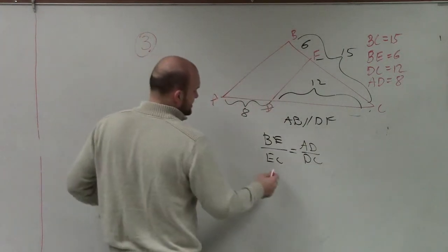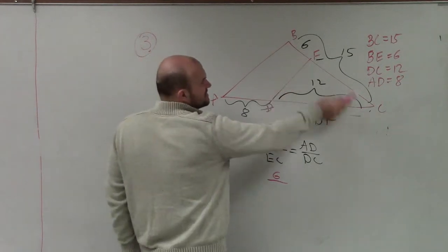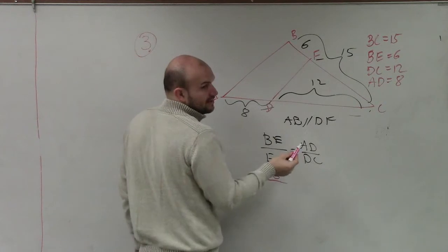So now let's just plug in our lengths. So we know BE, which is 6, is to EC. We have a problem, though. We don't know EC. We only know BC and BE. But Kevin, if that's 6 and that's 15, what does this have to be? 9.